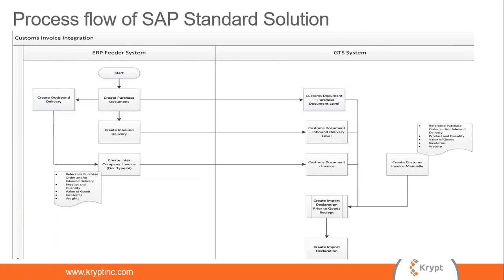This is the business process flow we'll demonstrate in the SAP and GTS systems for the customs invoice functionality. We will cover the intercompany stock transfer order process: it starts with a purchase order, we create an intercompany purchase order, then create an outbound delivery, complete post goods issue, and create an intercompany billing document with reference to that delivery. Once we save the intercompany billing document, it creates a customs invoice document in GTS, which can then be used to create import declarations prior to goods receipt.